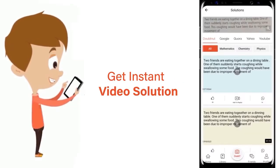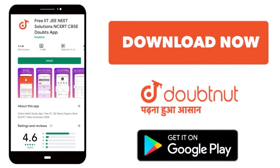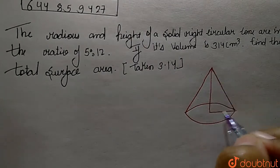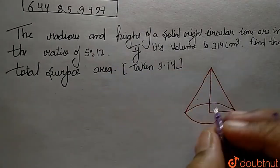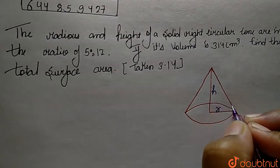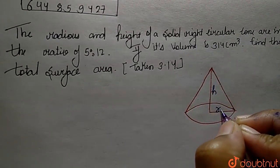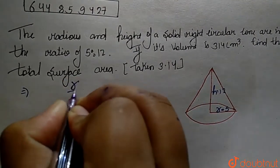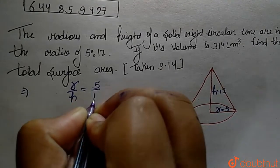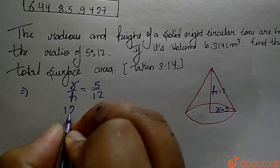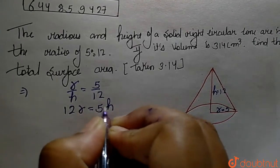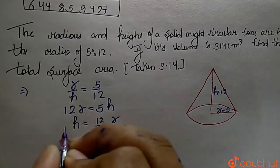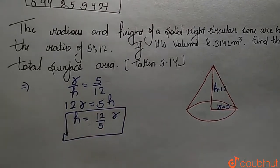The radius and height of a solid right circular cone are in the ratio 5:12. So r upon h equals 5 upon 12. When we simplify, 12r equals 5h, and the value of h will be 12 by 5 multiplied with r.